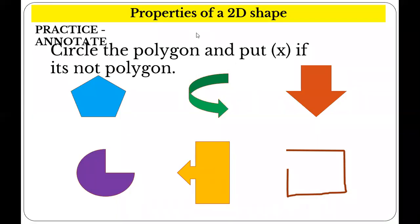Now, I want you to tell me which of these are called polygons. Remember the meaning of polygon? A polygon is a 2D shape that is closed and has straight sides. I want you to circle the polygons and put an X if it is not a polygon. You are going to submit it. This is the first question I need you to answer.